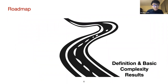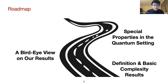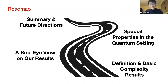Because of the importance of MCSP in classical complexity theory, it motivates us to think about what happens when quantum meets MCSP. In the rest of the talk, I'll start with some basic definitions and results about how to define MCSP in the quantum setting, then give a bird's-eye view on our results, then use some highlights to discuss special properties unique to the quantum setting, and finally summarize with future directions and open problems.